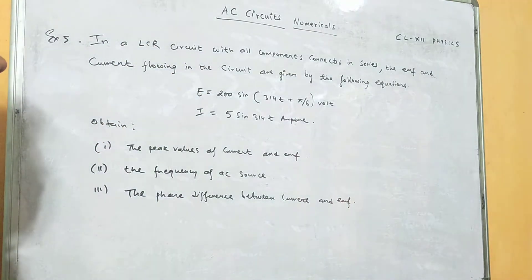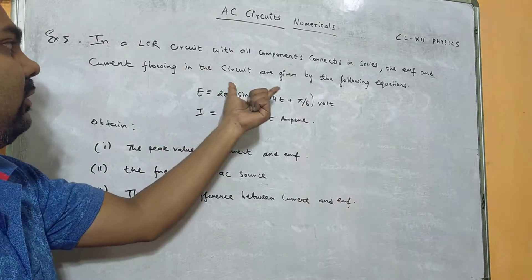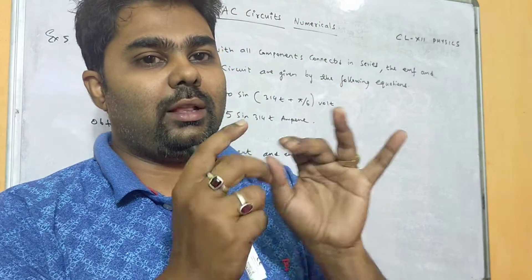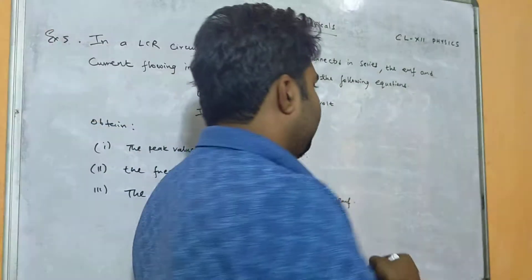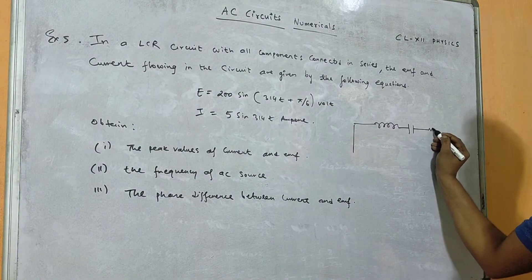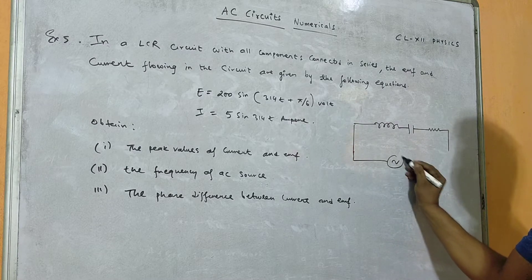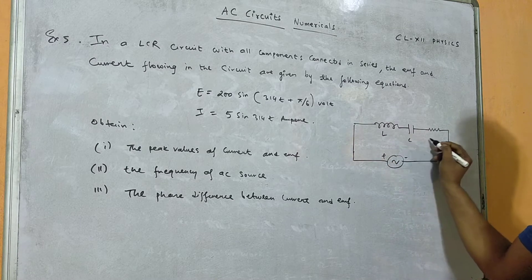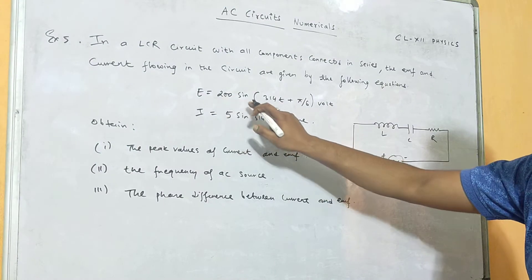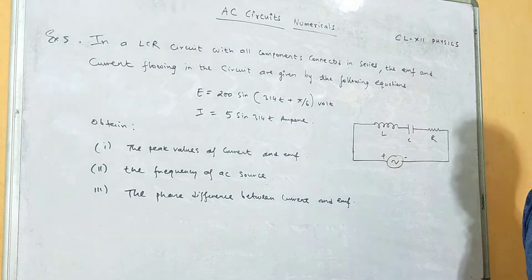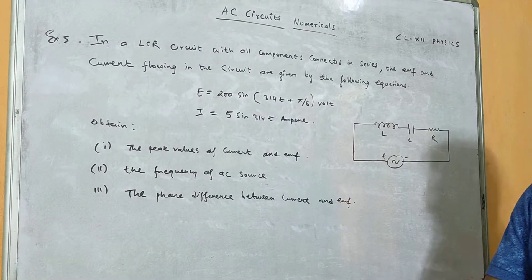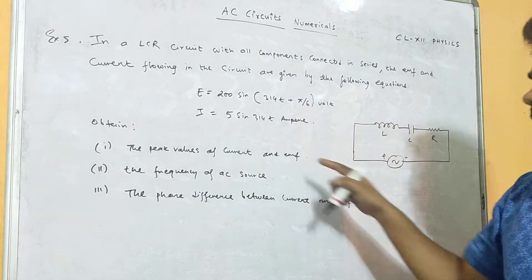Without any delay, let's start our class today. In our LCR circuit with all the components connected in series, the EMF and current flowing in the circuit are given. In an LCR circuit — that is inductor, capacitor, and resistor — when connected with an alternating voltage, the voltage supplied is given by E equals 200 sine 314t plus pi by 6 volts, and current is given by 5 sine 314t. We have to find the peak values of current and EMF.